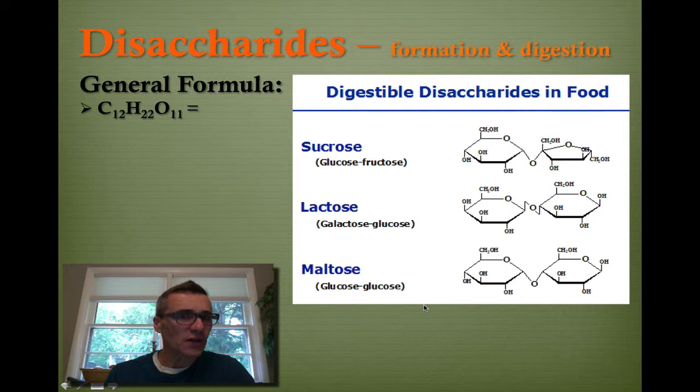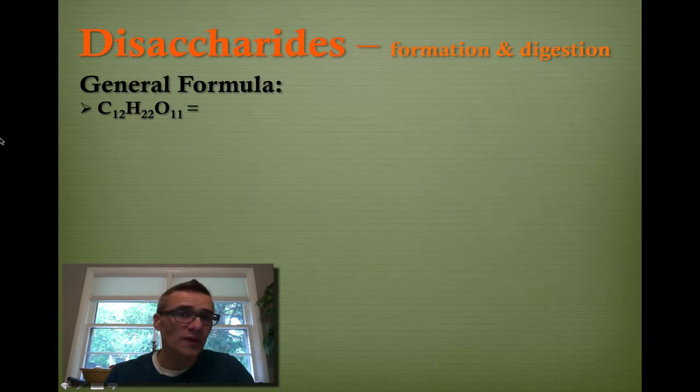If you remember, the general formula for this was C12H22O11. And we're going to take a look at that formula now and see why it's not exactly a 1 to 2 to 1 ratio of carbon, hydrogen, and oxygens. And it has to do with how we put these together.